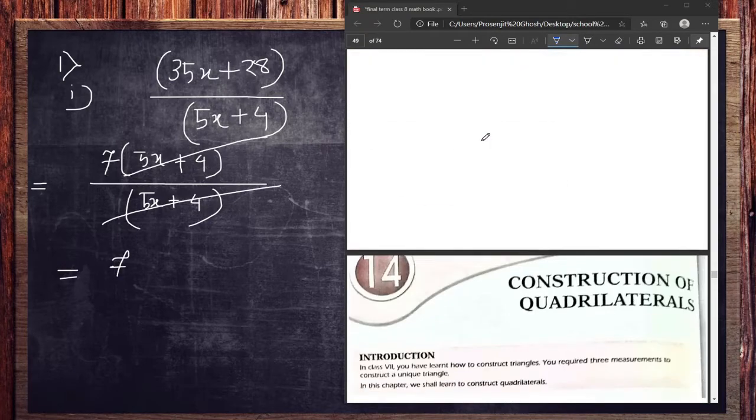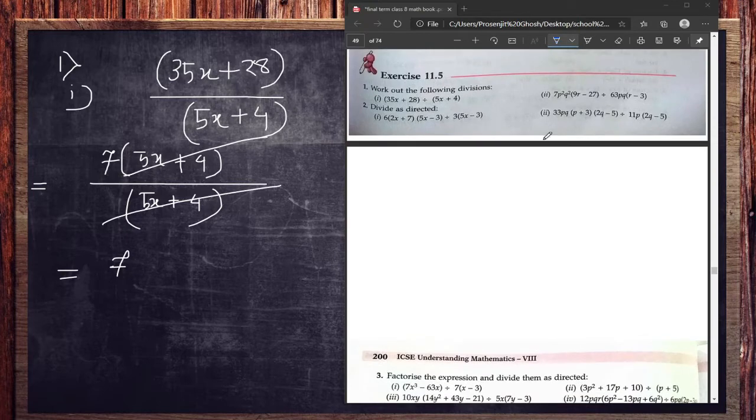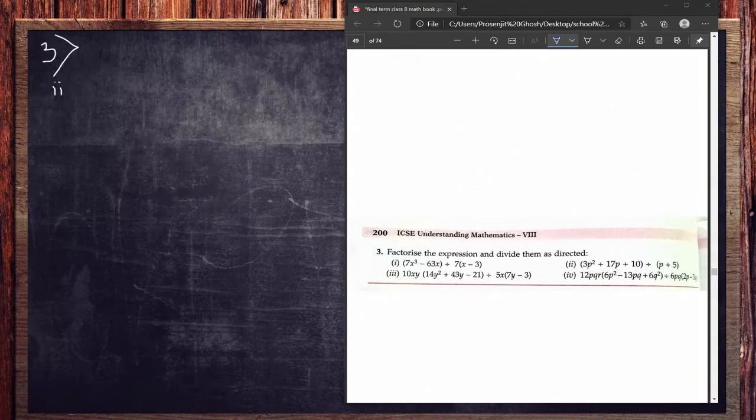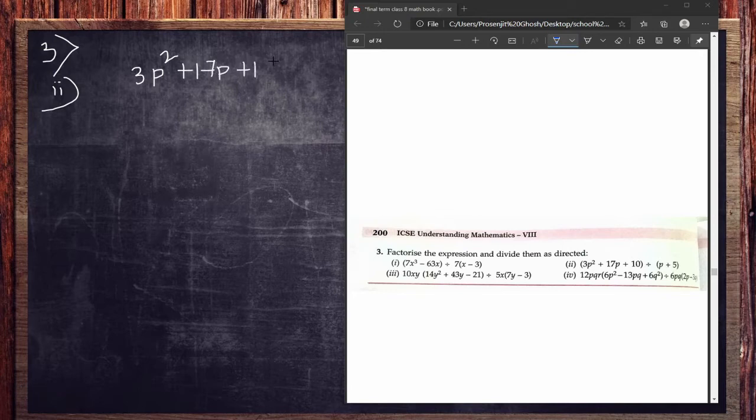Okay, so very few sums are here. We are going to do the next one, that is 3 part 2. In 3 part 2 what is given? That is 3p square, okay, plus 17p plus 10. That should be divided by p plus 5.